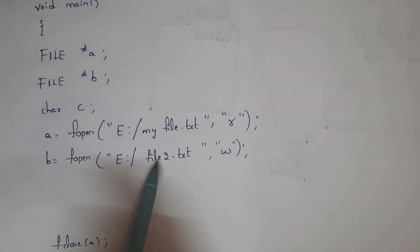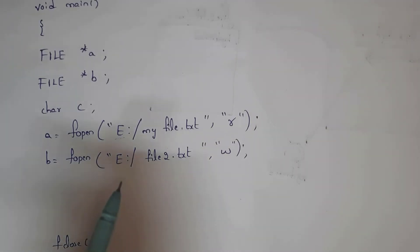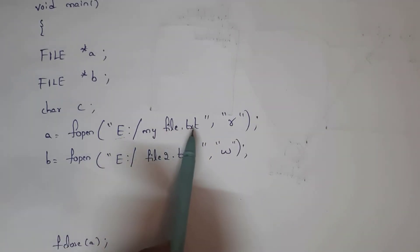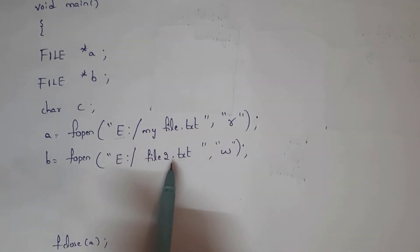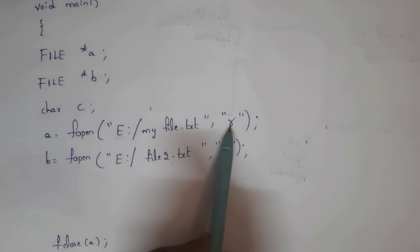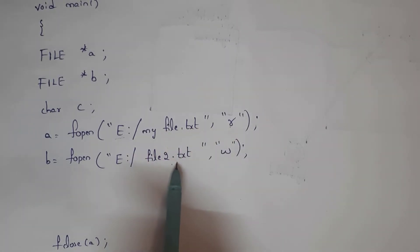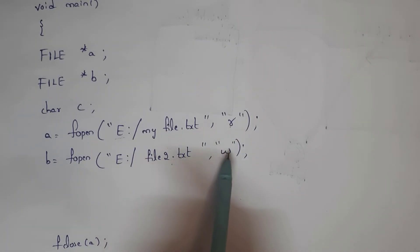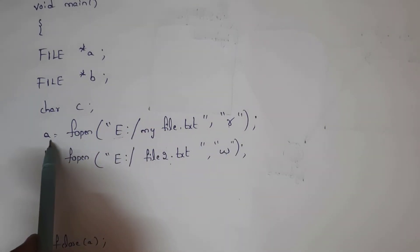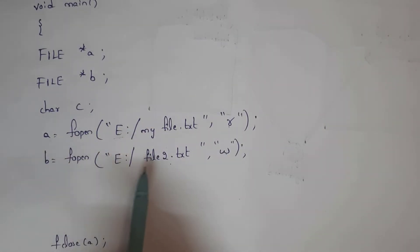After that I written b equal to fopen of file2.txt. For myfile.txt I need to use read mode, and for file2.txt I need to use write mode. myfile.txt is stored in pointer variable a and file2.txt is stored in pointer variable b.